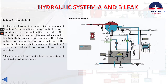Now let's talk about the system B hydraulic leak. If a leak develops in either pump, line, or component of system B, the quantity decreases until it indicates approximately zero and system B pressure is lost. The system B reservoir has one standpipe which supplies fluid to both the engine driven pump and the electric motor driven pump.